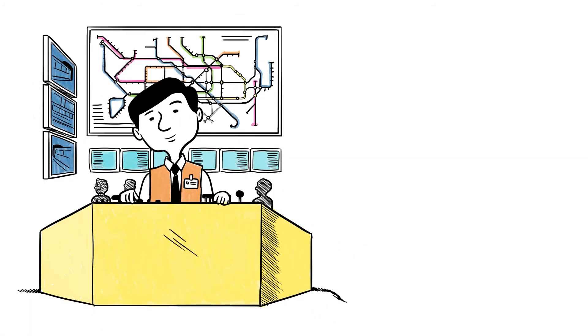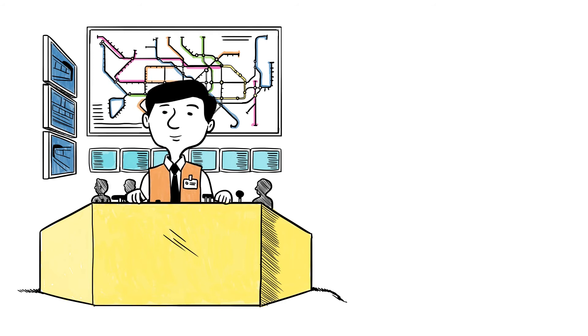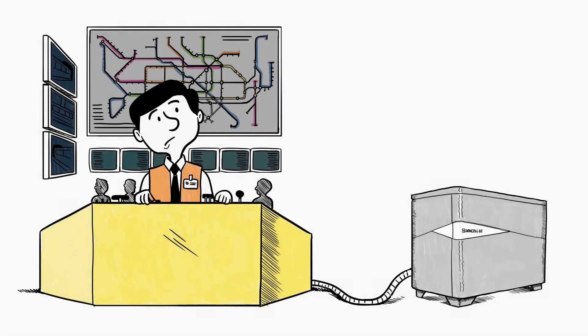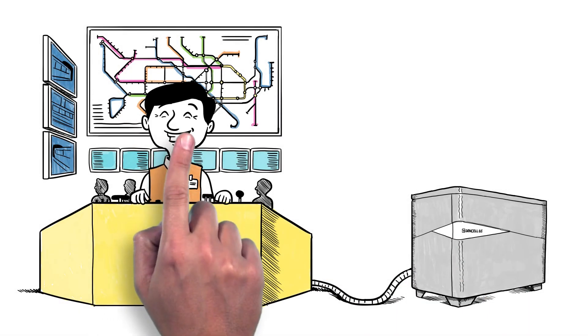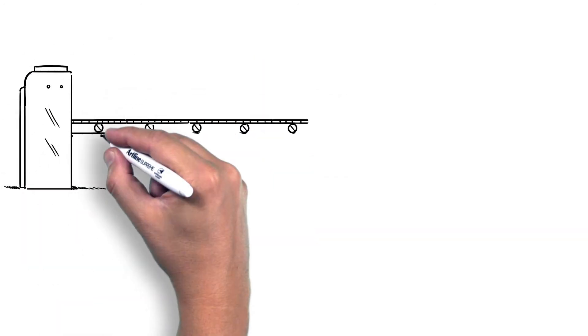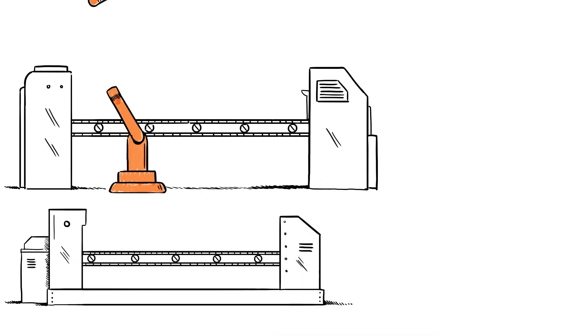GenCell fuel cell solutions also immunize your business from electrical spikes or outages with instant backup power. And they support you through sustained outages that last several hours or even several days. This makes GenCell solutions great for providing backup power to production line robots of all types.